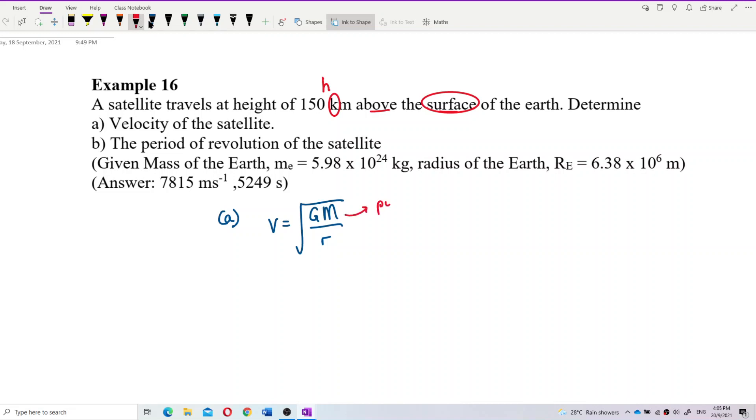So the formula for v for the satellite is square root GM over r. Where this m is the point mass, the Earth mass, not the satellite mass. And this r, you must take radius of Earth plus h, not just the altitude.